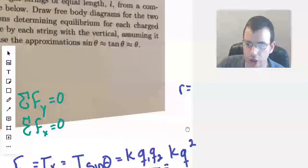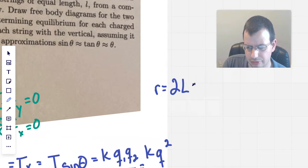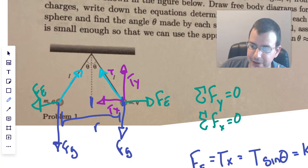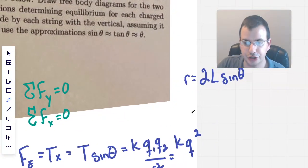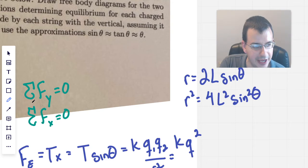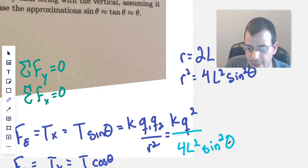So what would be the distance between the two charges? And we know that this distance right here is going to be L times sine theta. So R would be 2L sine theta. And the reason we have the 2 there is because L sine theta just gives us this distance right there. So we have two of those, and that gives us the full distance. But we don't want R, we want R squared. So we go R squared equals 4L squared sine squared theta.